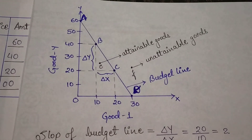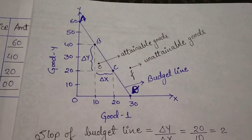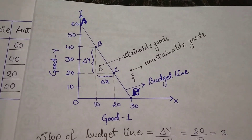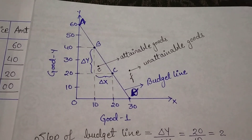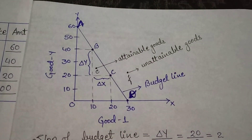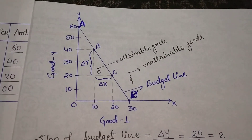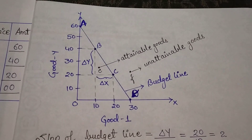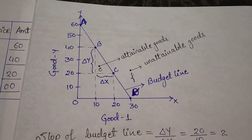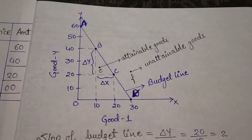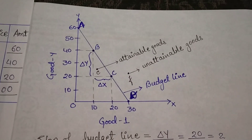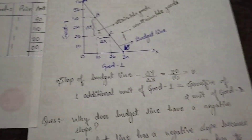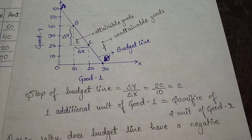So points A, B, C, D, E - all are budget set. If we shift to the right of budget line, we cannot purchase any commodity there. On the budget line, combinations A, B, C, D are both budget set and budget line. Now we have to discuss about the slope of budget line.